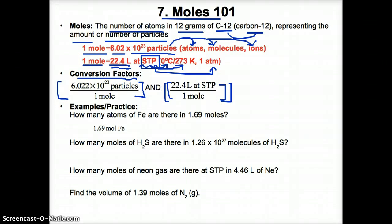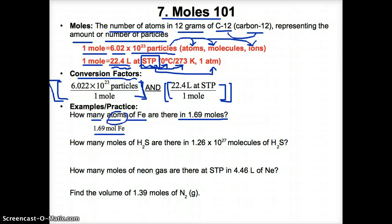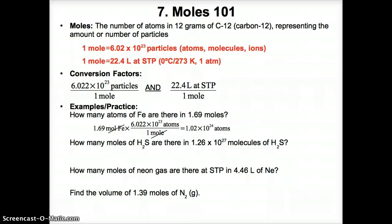Two conversion factors you need to convert between moles, number of particles, and volume at STP are: 6.02 × 10²³ particles per one mole, and 22.4 liters at STP per one mole. Memorize these so you can convert between moles, liters at STP, and number of particles. For example: how many atoms of Fe are there in 1.69 moles? Start with 1.69 moles and multiply by 6.02 × 10²³ atoms per mole. The moles cancel out, giving 1.02 × 10²⁴ atoms.